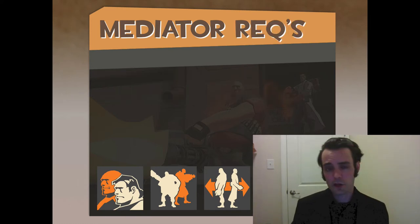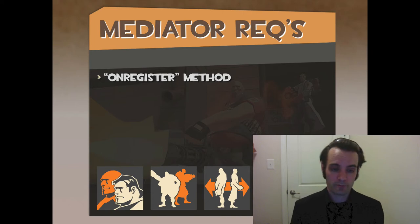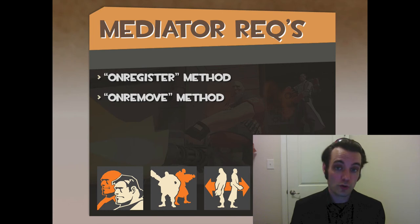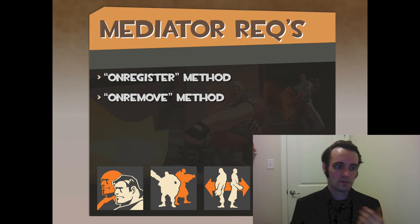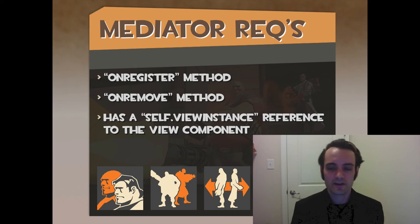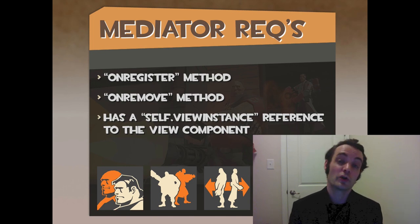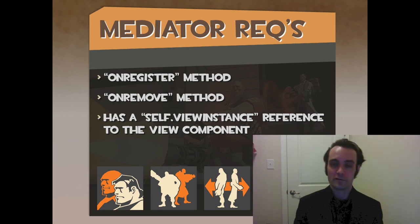The requirements for a mediator are two things. Number one: you must define an `onRegister` method, which is called when the view is created and provides a reference to it. Number two: when the view is removed and destroyed, you have an `onRemove` method to clean up event listeners, clear references, or notify the user. The mediator has an instance of the view via `self` — that view instance is valid when `onRegister` is called and is only nulled after `onRemove` finishes.